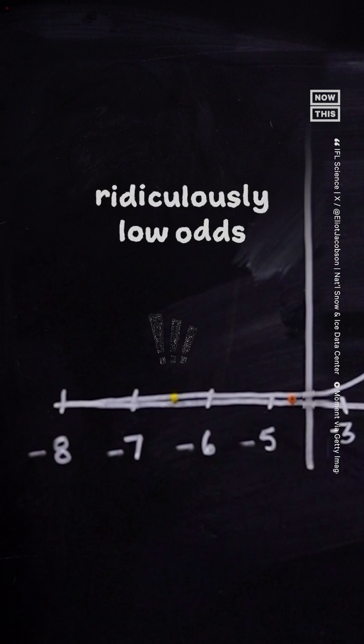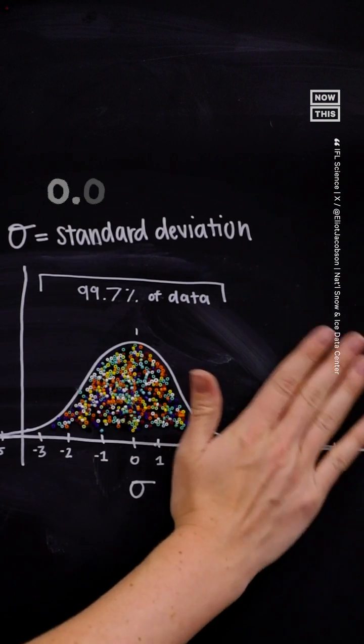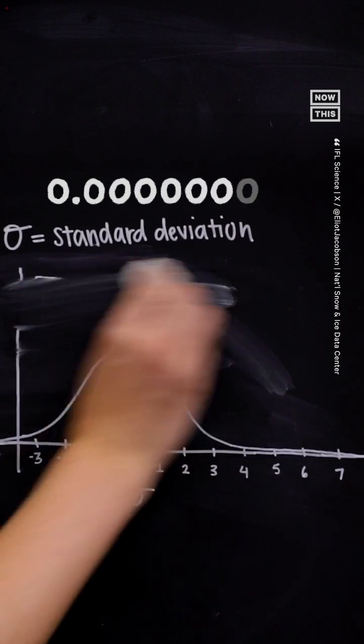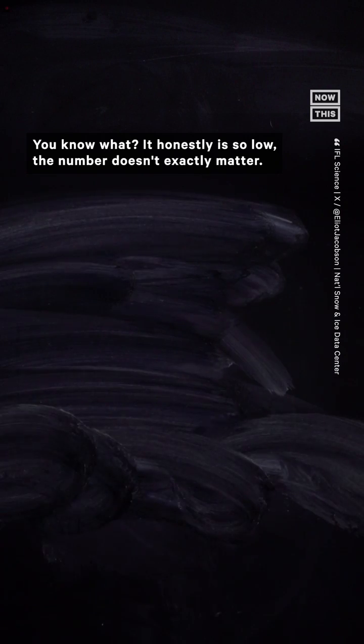it signifies ridiculously low odds of this being caused by normal ice fluctuations, like a 0.0000000000. You know what? It honestly is so low, the number doesn't exactly matter.